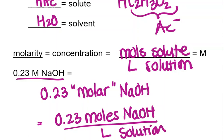But what that means is that you have 0.23 moles of sodium hydroxide per liter of the solution. And we're going to use that molarity as a conversion factor in our calculations. It allows us to go from volume of solution to moles of that reactant.